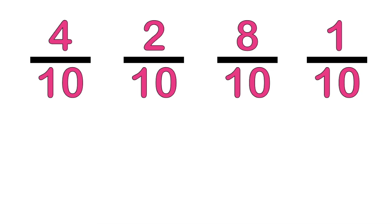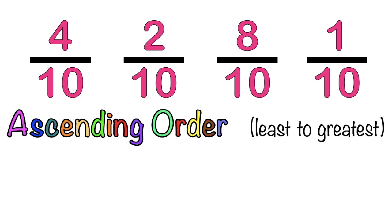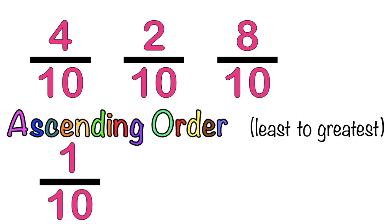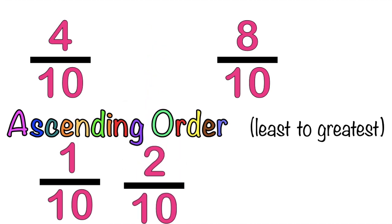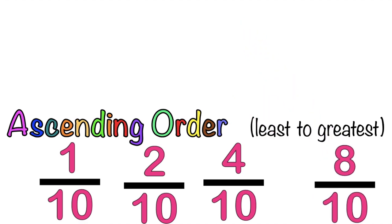How about if I have this set of fractions? I want you to arrange them in ascending order. When you say ascending order, that is from least to greatest or smallest to biggest. Which of these fractions is the smallest? That's correct! It's 1-tenth. The second is 2-tenths, the third is 4-tenths, and the last one is 8-tenths. So, 1-tenth, 2-tenths, 4-tenths, and 8-tenths is arranged in ascending order.